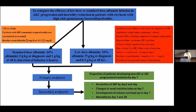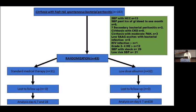Patients have been randomized into two arms: standard dose and low dose albumin. The primary endpoint is the proportion of patients developing new AKI, or AKI progression or resolution by day seven. Secondary endpoints are resolution of SBP by day 2 and day 6, changes in renal resistive index at baseline and day seven, and development of volume overload and mortality by day seven and day 28.